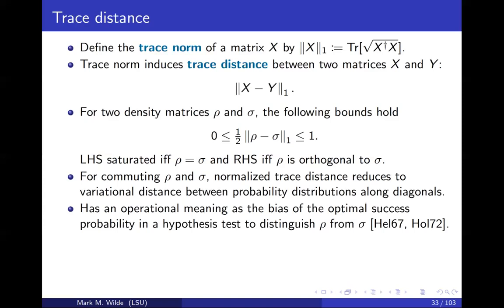If rho and sigma commute, then the trace distance reduces to what's called variational distance in classical information theory. The reason that we use the trace distance is that it's this principled approach that I was talking about. It has a physical meaning as the bias of the optimal success probability in an experiment where you're trying to distinguish rho from sigma. I don't think I'm going to get into that in this lecture, but that you can find in textbooks.